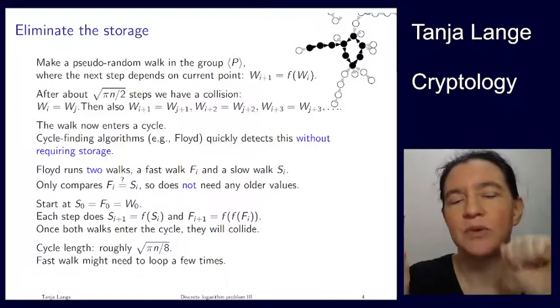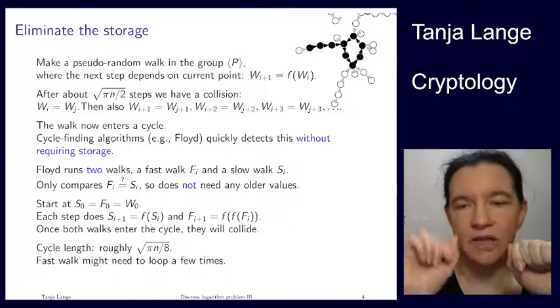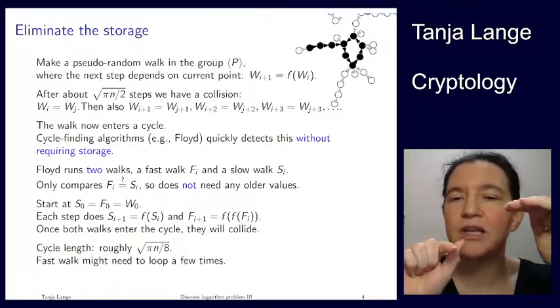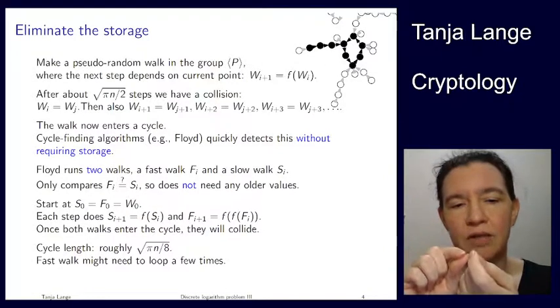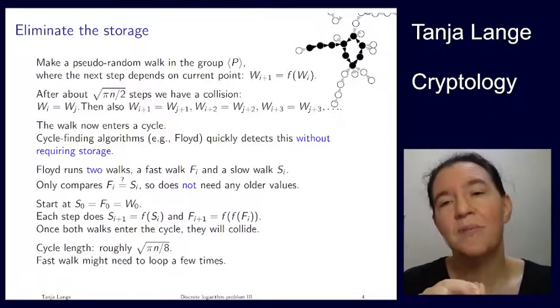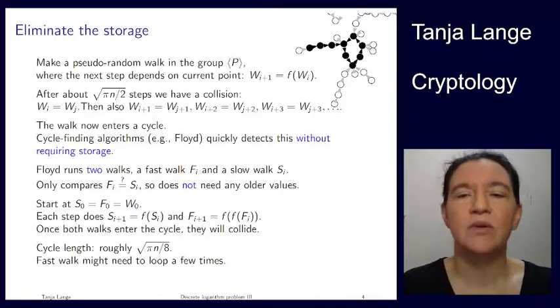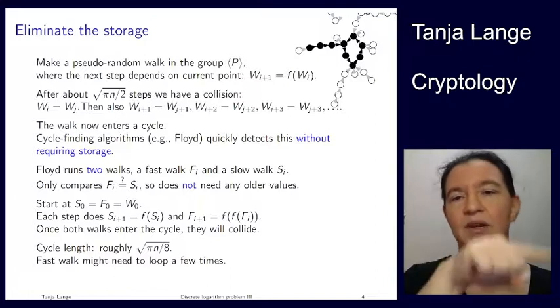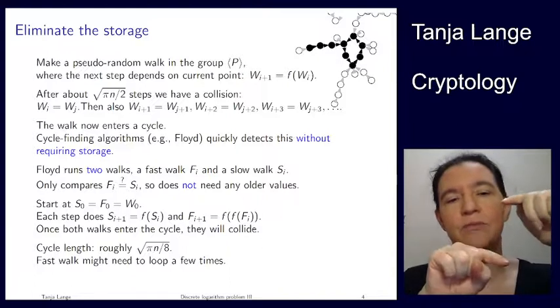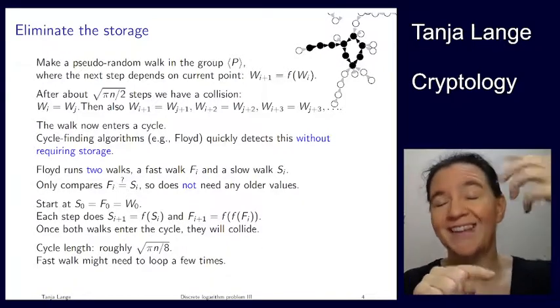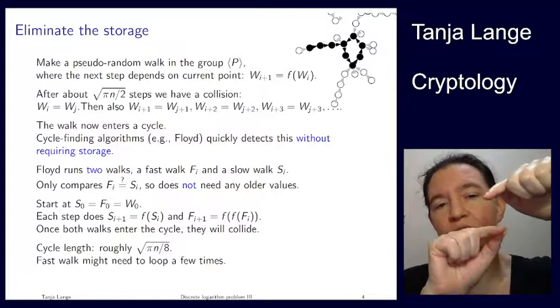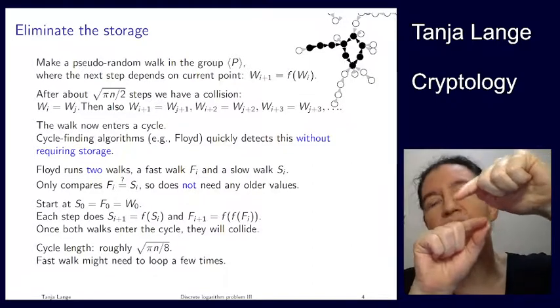And so eventually the fast one will enter the cycle. The slow one is still on the tail. The fast one advances on the cycle. Runs around there. The slow one is still on the tail. Eventually the slow one and the fast one are both in the cycle. And then they will collide. When? Well, it depends on how they enter relative. So if the fast walk is just before the collision, like the actual collision, which you won't find, then the slow walk comes in. Now the slow walk advances by one. The fast one advances by two. The slow one advances by one. The fast one advances by two. They will very quickly catch up.